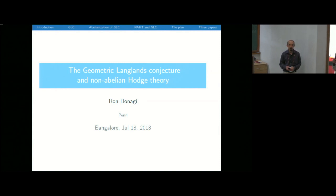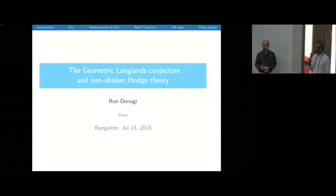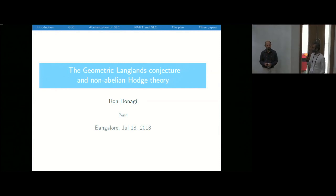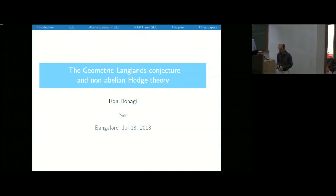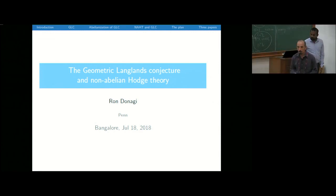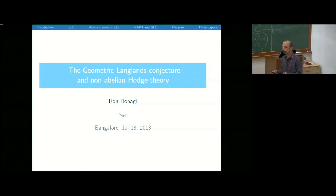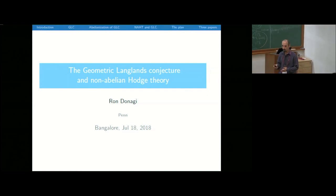We have the last lecture by Ron Donaghi from UPenn, who will tell us more about the geometric Langlands conjecture and non-abelian Hodge theory. I'm going to take five minutes or so to review what has transpired in the previous two talks, especially since there are a number of new people in the audience.